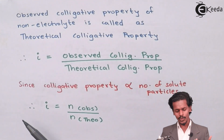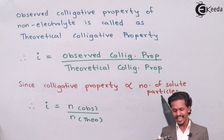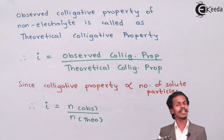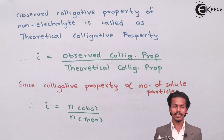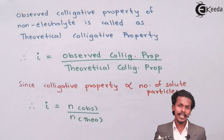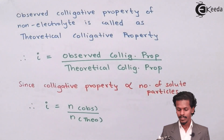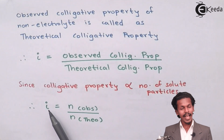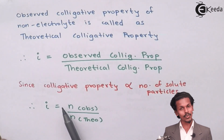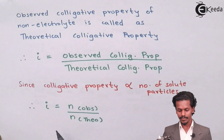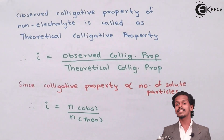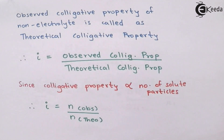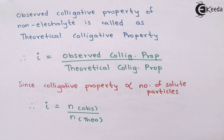Since we know that colligative properties are directly proportional to the number of particles, if the number of particles increases then the colligative property also increases. So the Van't Hoff factor i equals n_observed divided by n_theoretical, where n is the number of moles or particles. The theoretical value is fixed, while the observed value can be more or less depending on association or dissociation.